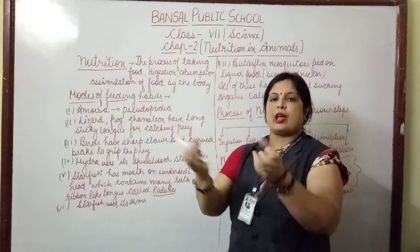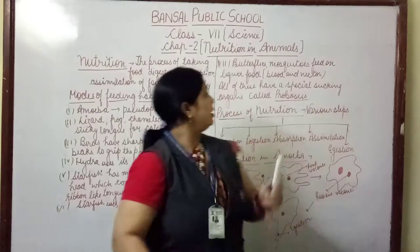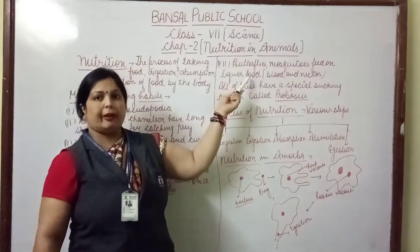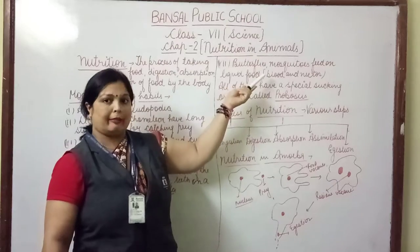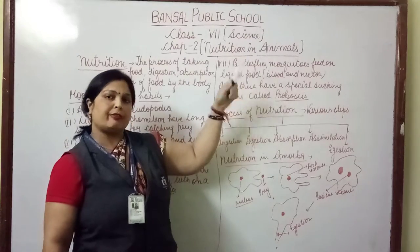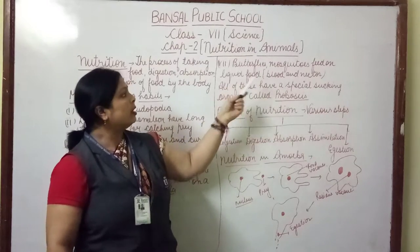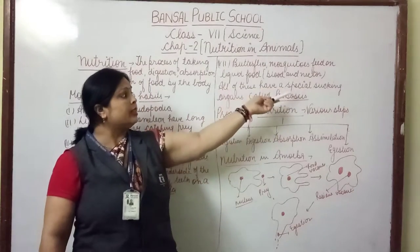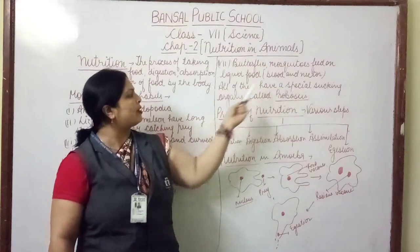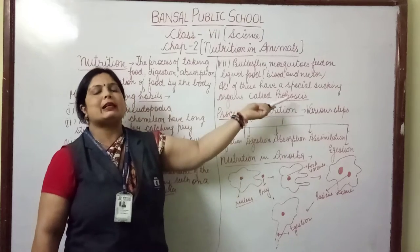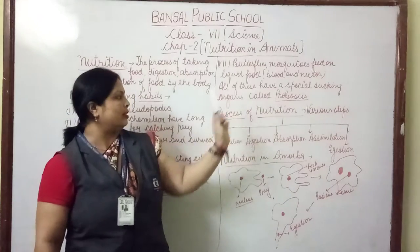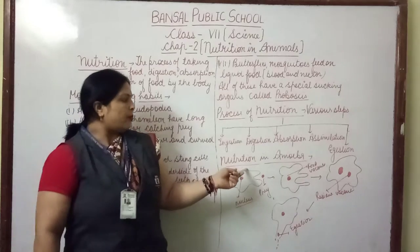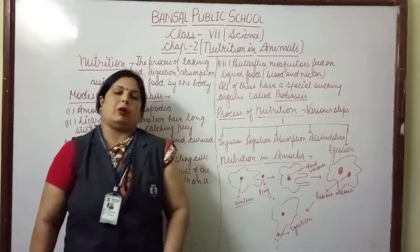Starfish uses its arms for capturing prey. Butterflies and mosquitoes feed on liquid food — they release saliva which contains digestive enzymes. Their liquid food is nectar and blood respectively. All of these organisms have a specialized sucking organ known as a proboscis.